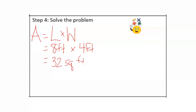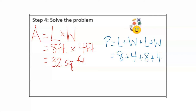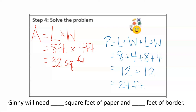Next, I will find the perimeter. When I find the perimeter, I add all of the side lengths: P = length + width + length + width. Our length is 8 feet and our width is 4 feet. Eight plus four is 12, and 8 plus 4 is 12 again. Twelve plus 12 is 24, so our perimeter is 24 feet. Ginny will need 32 square feet of paper and 24 feet of border for her bulletin board.